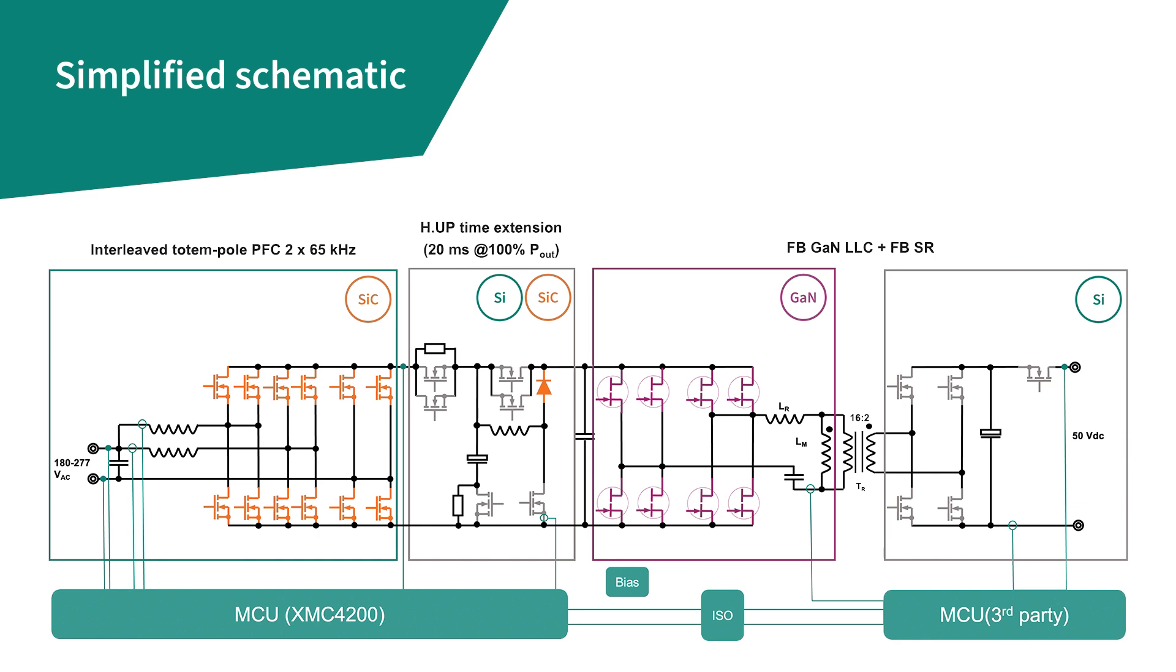An auxiliary power circuit for in-rush, re-rush, and hold-up time extension is connected between the first AC-DC PFC and the second DC-DC conversion stage. This stage enables 20 millisecond hold-up time and controls in-rush and re-rush currents during line cycle dropout events.